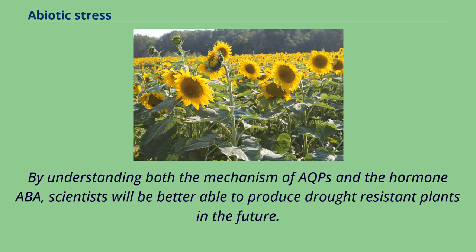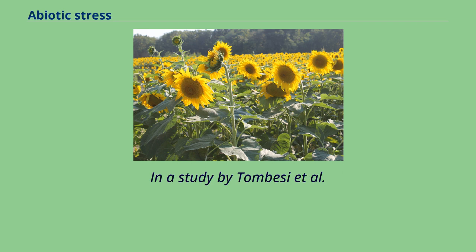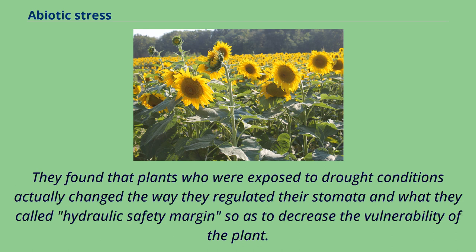One interesting thing found in plants consistently exposed to drought is their ability to form a sort of memory. In a study by Tunzi et al., plants who had previously been exposed to drought were able to come up with a strategy to minimize water loss and decrease water use. These plants actually changed the way they regulated their stomata and what the researchers called hydraulic safety margins, so as to decrease the vulnerability of the plant. By changing the regulation of stomata and subsequently the transpiration, plants were able to function better in situations where the availability of water decreased.